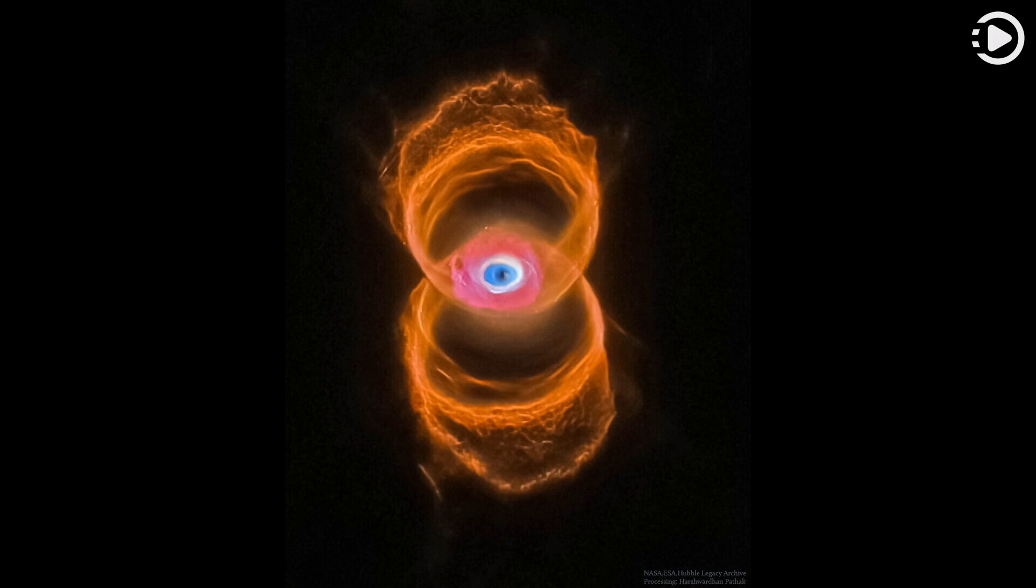With its nuclear fuel exhausted, this brief, spectacular closing phase of a sun-like star's life occurs as its outer layers are ejected, its core becoming a cooling, fading white dwarf.